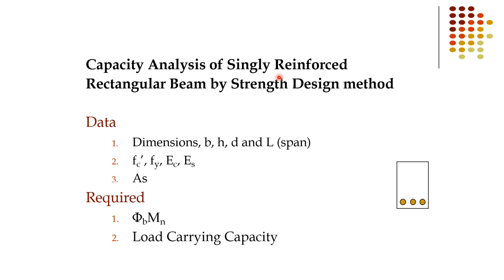In a singly reinforced beam, the cross-section has reinforcement bars only at the bottom — no main bars at the top. Hangers or ties may be present, but the main longitudinal bars are at the bottom only. When only the bottom bars act as main bars, the section is called a singly reinforced beam.